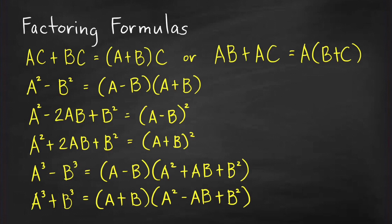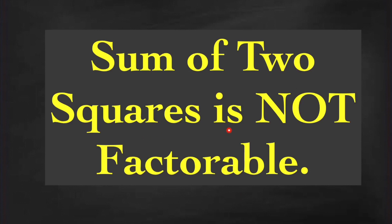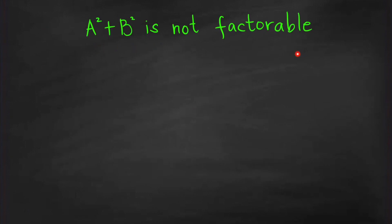Your teacher might tell you that sum of two squares is not factorable. I won't be surprised if you think that statement is true, because I have read several math textbooks which say the same thing. In this video, I'm going to convince you that this statement is misleading. We will discuss a strategy on how to factor sum of two squares in cases where they are factorable. Keep in mind that here we are talking about factoring polynomials with integer coefficients, and we want all factors to be polynomials with integer coefficients too. The statement 'A squared plus B squared is not factorable' is true if you're factoring A squared plus B squared in terms of A and B only. But if A and B represent any polynomials, then this statement is incorrect.